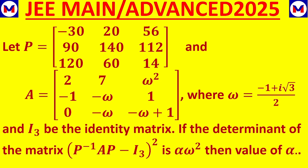The problem is: let P equal a matrix, AB equal a square matrix, and I3 is an identity matrix. We have a relation: P inverse AP minus I3, whole squared equals alpha·omega squared. The determinant of this matrix is alpha·omega squared. Then find the value of alpha.